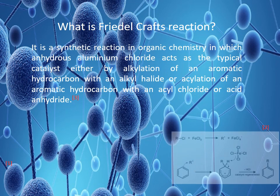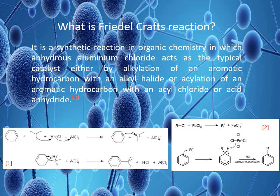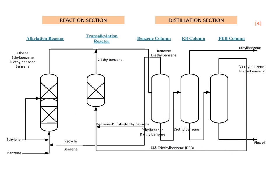It is a synthetic organic reaction in which anhydrous aluminium chloride acts as the typical catalyst, either by alkylation or acylation of an aromatic hydrocarbon. In this video, we will be focusing on the alkylation process in the production of ethylbenzene. Now let us consider this process flow diagram — this process is known as EB-1 technology, and it consists of a reaction and distillation section.